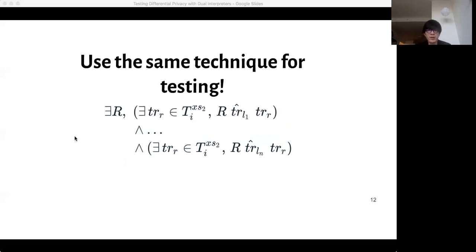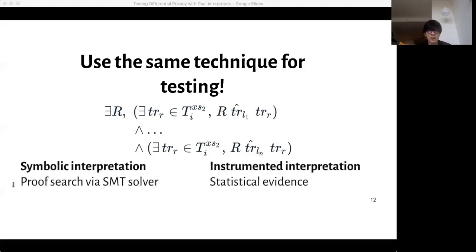So we observed that instead of universally quantifying over the left-hand side execution trace, we can simply sample them from actually running the program on some input xs_1. And for each of those sampled traces, we're going to substitute the originally universally quantifying variable with a concretely sampled trace, and we're going to build a large conjunction over all of these sampled traces. As we take more and more samples from running the program, and as we increase the size of this conjunction, we're kind of getting closer and closer to the original universally quantified proof. So this resulting testing technique is indeed a hybrid approach that both performs proof search via an SMT solver and collects statistical significance from sampling.